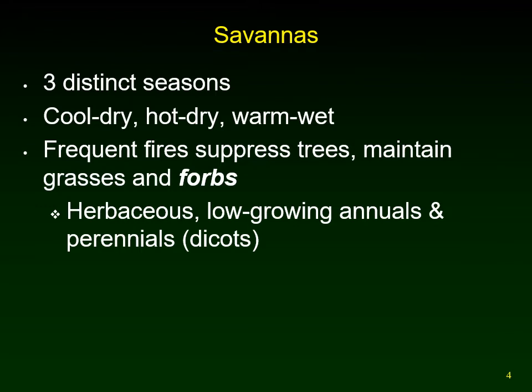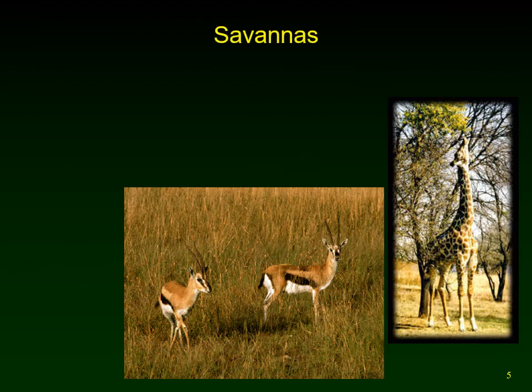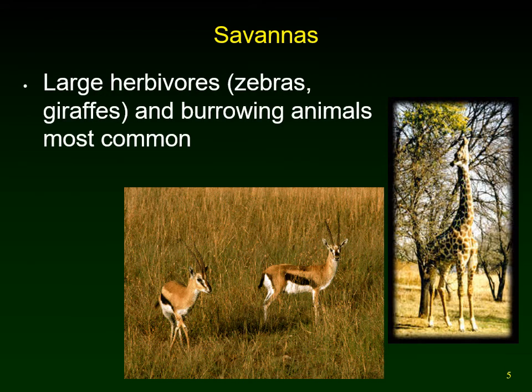The grasses are monocots — more recently evolved than many of the dicots. The savannah has large numbers of herbivores that feed on these plants. All this fresh green growth of grasses and forbs every year makes beautiful pasture land, producing large herds of herbivores. Animals also burrow into it, and these are the most common types of animals found here.